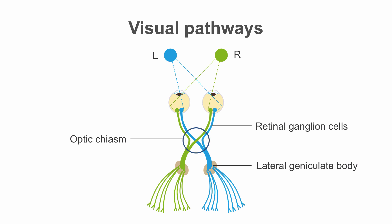Third-order neurons then leave the lateral geniculate body, forming the optic radiations and Meyer's loop, which travel through the temporal and parietal lobes and terminate in the visual cortex.